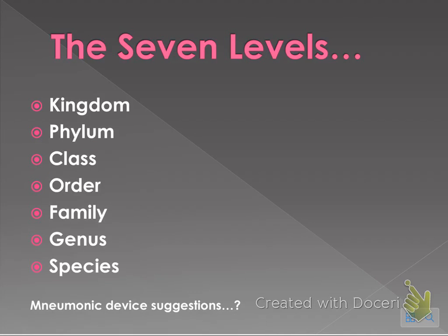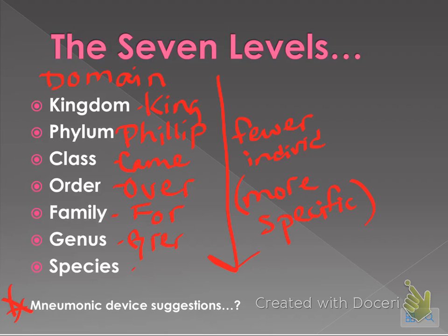The seven levels — I'm sure you've seen these before — are kingdom, phylum, class, order, family, genus, species. There's one to add at the top: the term domain. As we go down the hierarchy, there are fewer individuals because it becomes more specific in terms of shared traits. A good mnemonic device is 'King Philip Came Over For Great Spaghetti' to remember these levels in order.